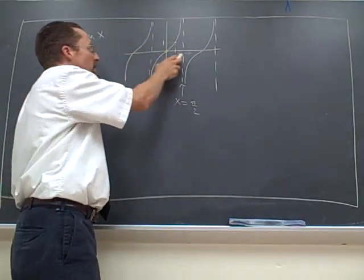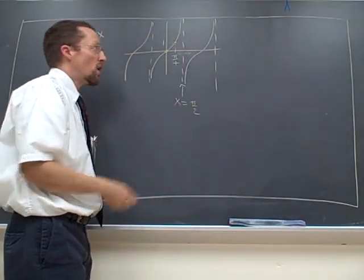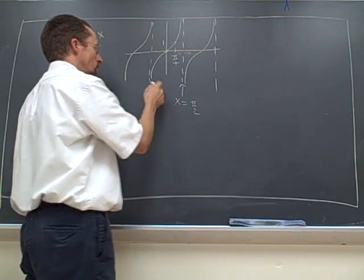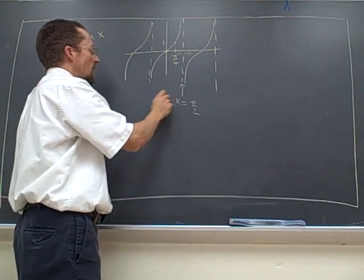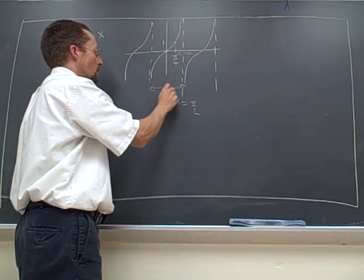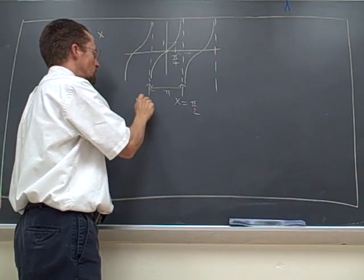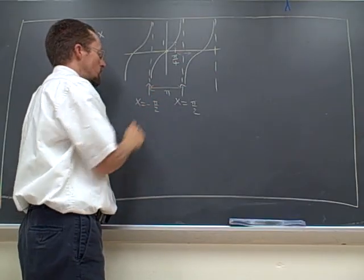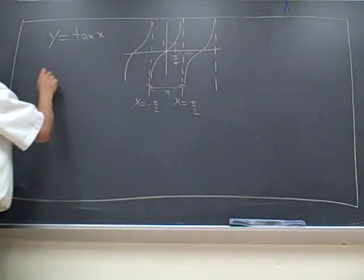Now the other thing we notice is it repeats, as all trig functions do, but it repeats, as we talked about, twice as often as we might think. The period is exactly pi. So this asymptote, for example, I claim is at x equals minus pi over 2.